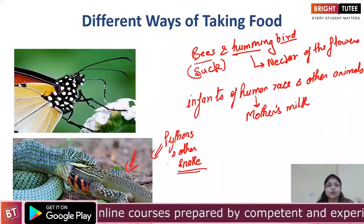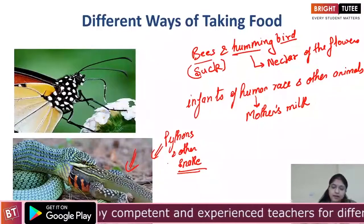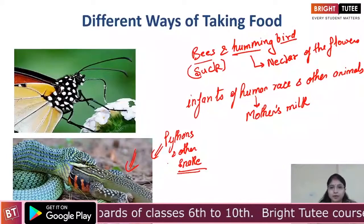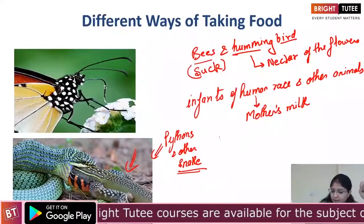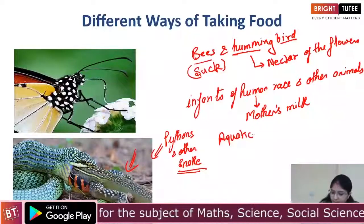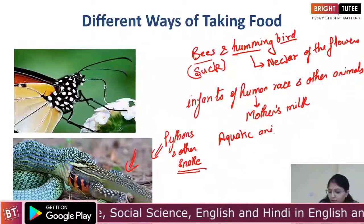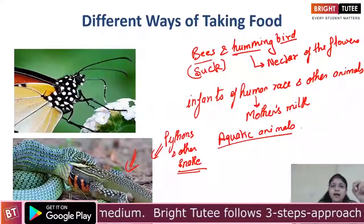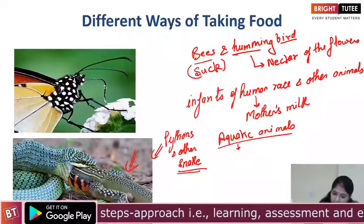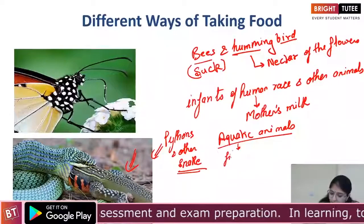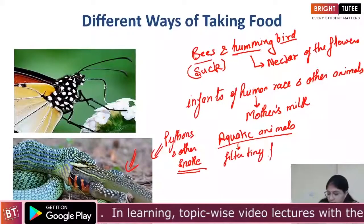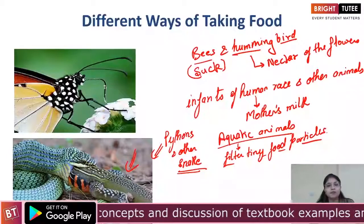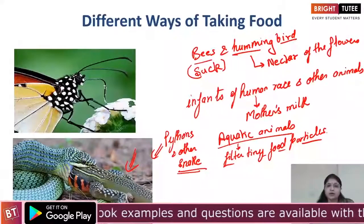So we see that different organisms feed on different things and in different ways. When we talk about aquatic animals, some of them filter tiny microscopic food particles that are floating near them and eat those. So in this way, there are different ways in which food is taken by these organisms.